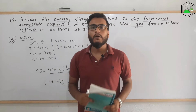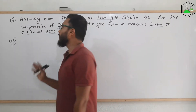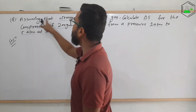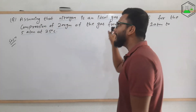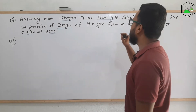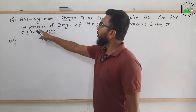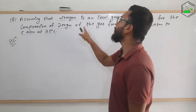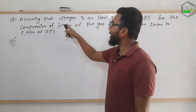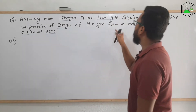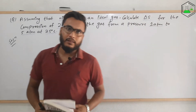Now let me write the question of the second numerical problem. Assuming that nitrogen is an ideal gas, calculate ΔS — the change in entropy — for the compression of 200 grams of the gas from a pressure of 1 atm to 5 atm at 25 degrees Celsius.